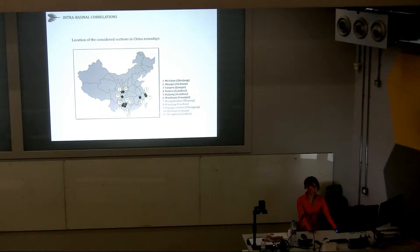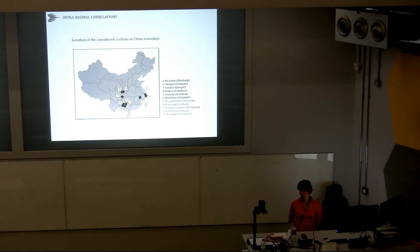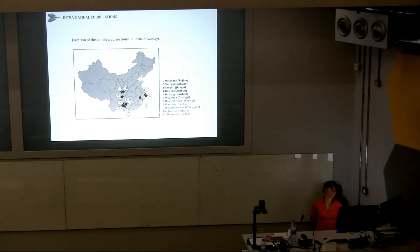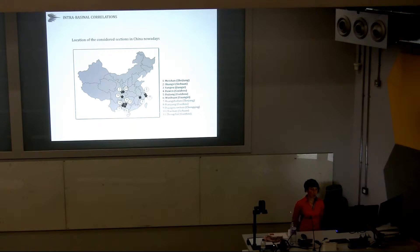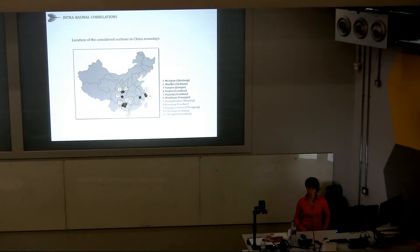Among a number of sections that I found in the literature, I selected six that combine a good abundant conodont record, good stratigraphical information about the elevation, and also a lot of pictures in order to standardize the taxonomy and to build intra-basinal correlations. Among these six sections is Meishan, which is the GSSP of the Permian-Triassic boundary.